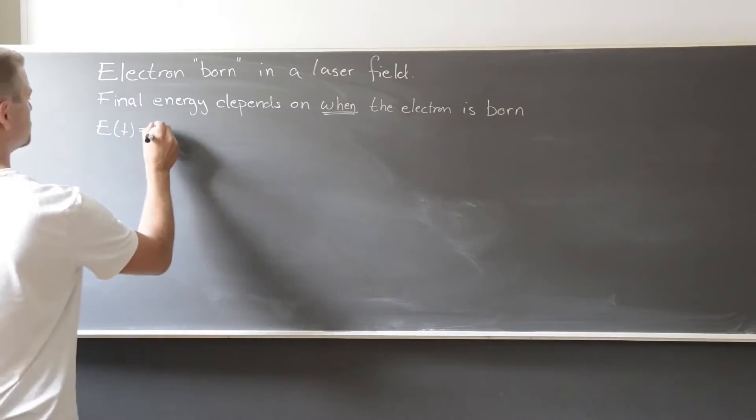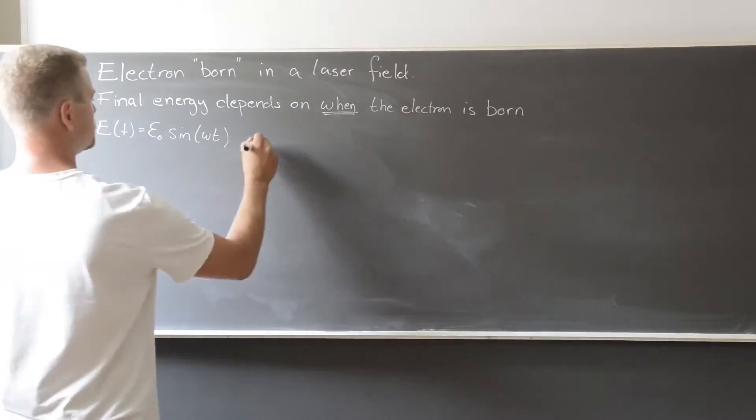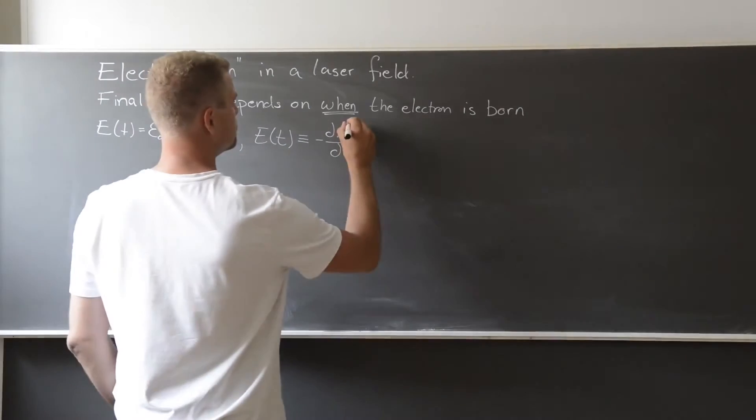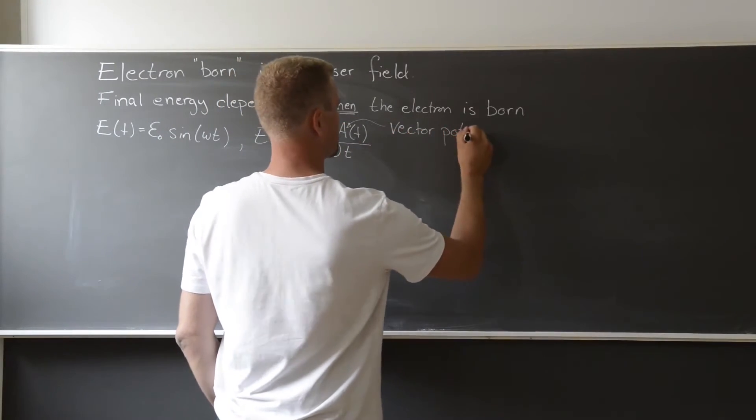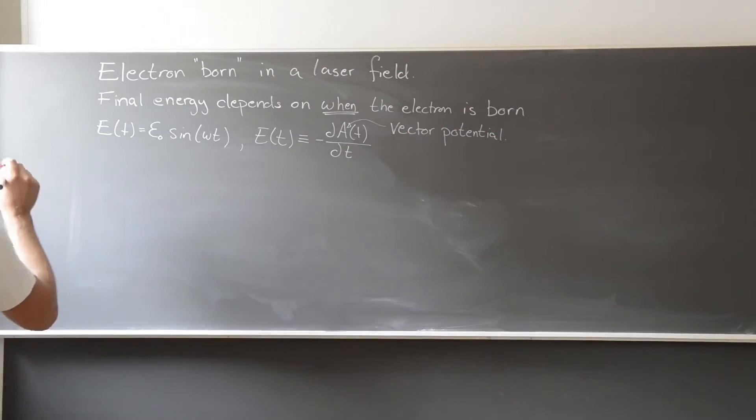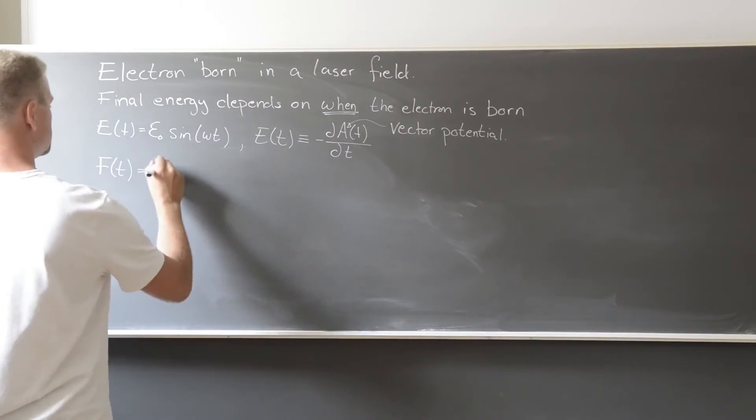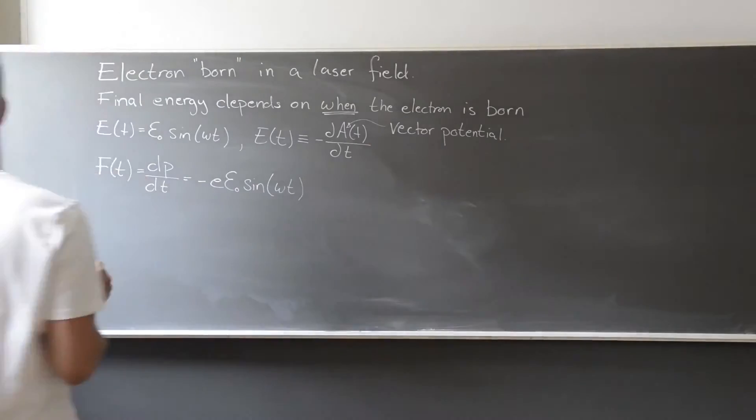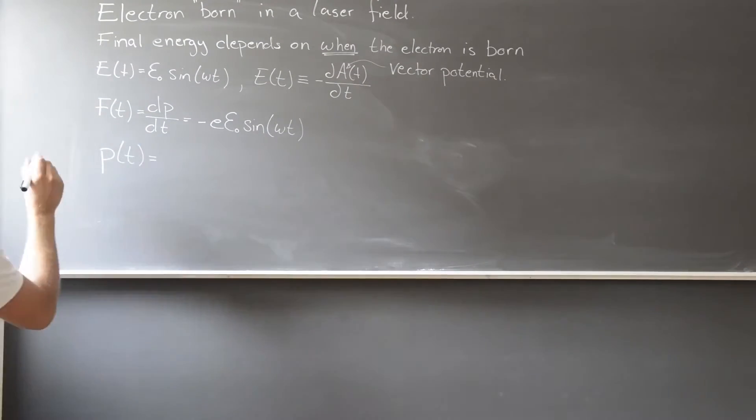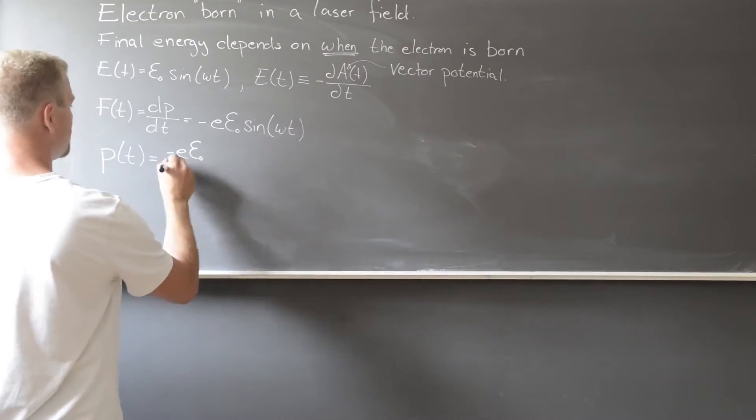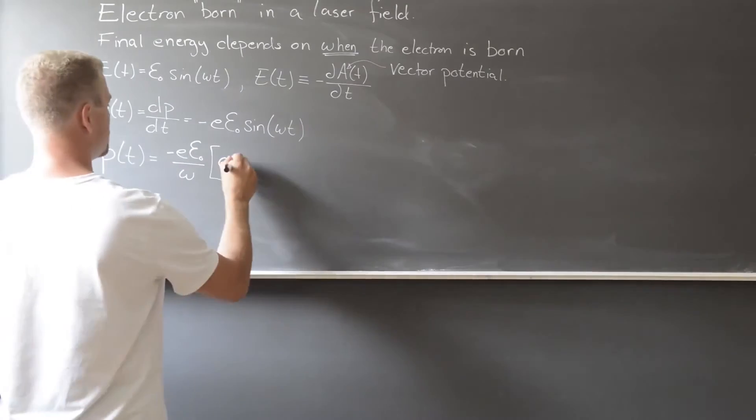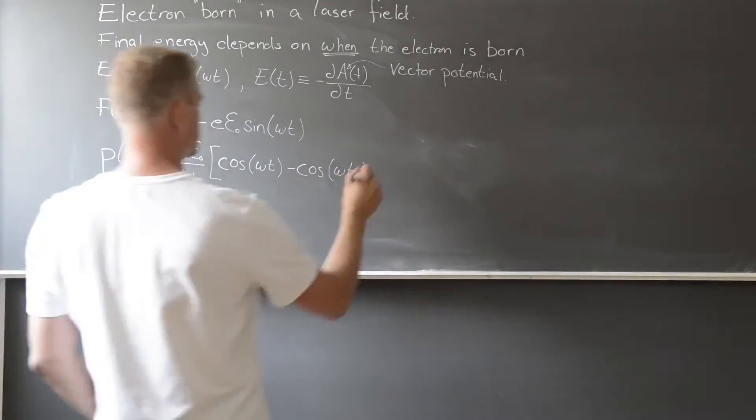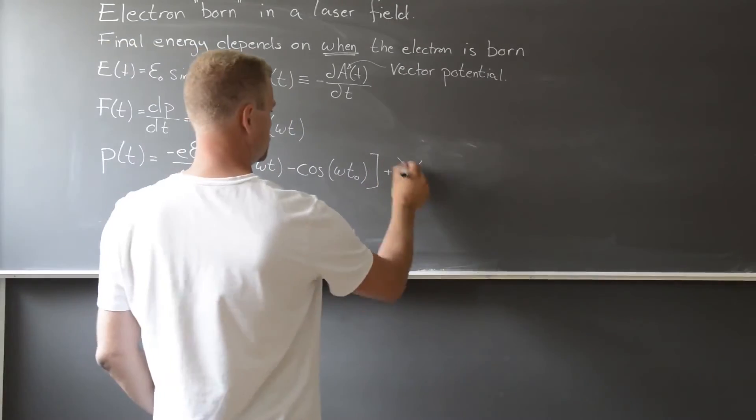To calculate this, we use the same expression for the electric field, but we also define the vector potential like this. And in this case, it's more convenient to calculate the momentum of the electron, and therefore we write the force as so. When we integrate this expression, we see that the initial timing becomes important, and also if the electron had an initial momentum, it would enter here, but for now we assume this to be zero.